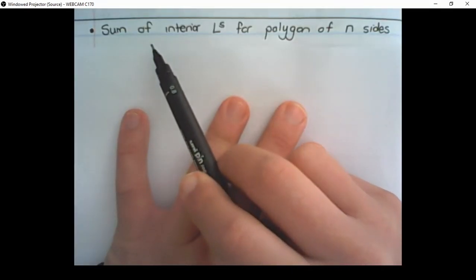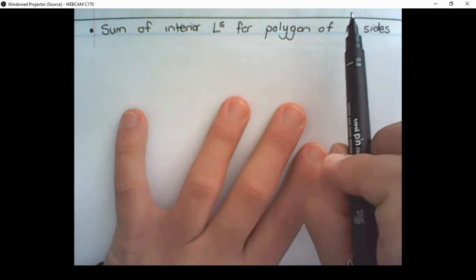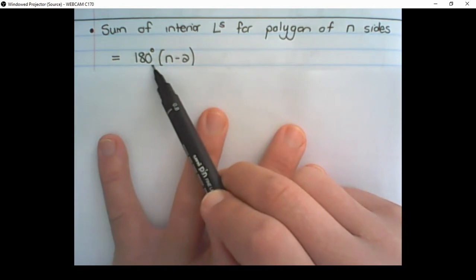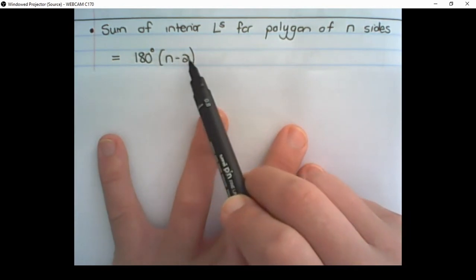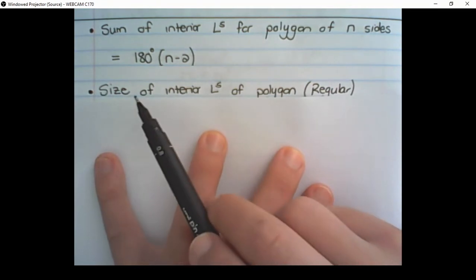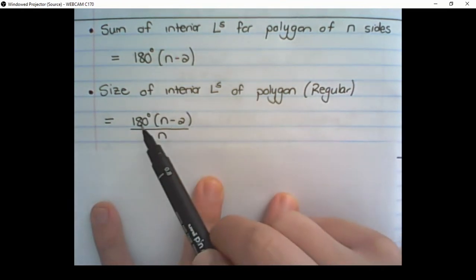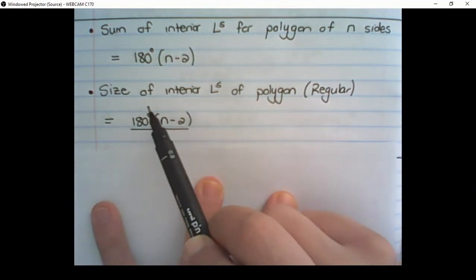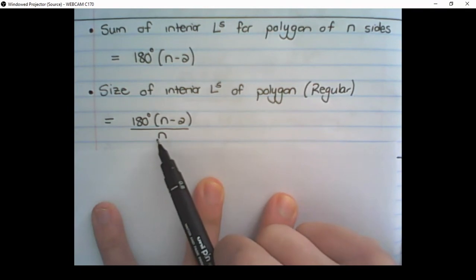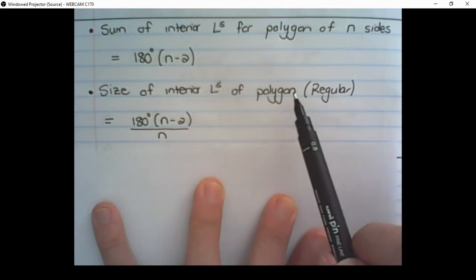Now we can calculate the sum of interior angles for polygons regardless of the number of sides using the following formula: 180 degrees times the number of sides minus 2. And the size of interior angles of a regular polygon can be calculated using: 180 degrees multiplied by (n minus 2) over the number of sides. But remember, this is only relevant to regular polygons.